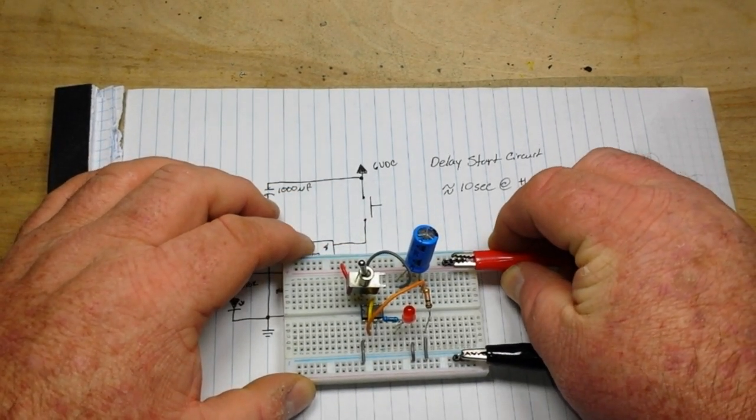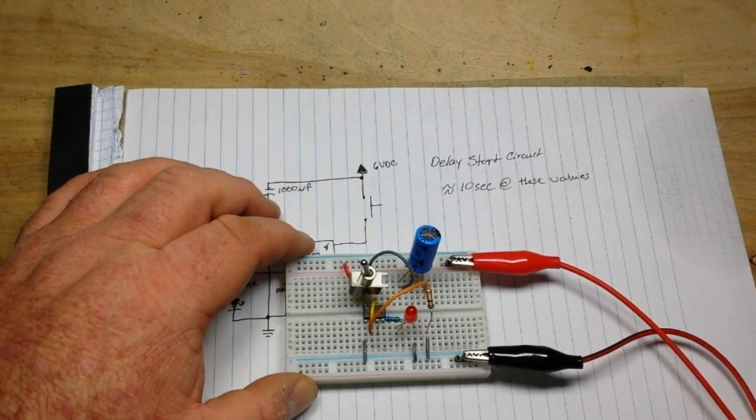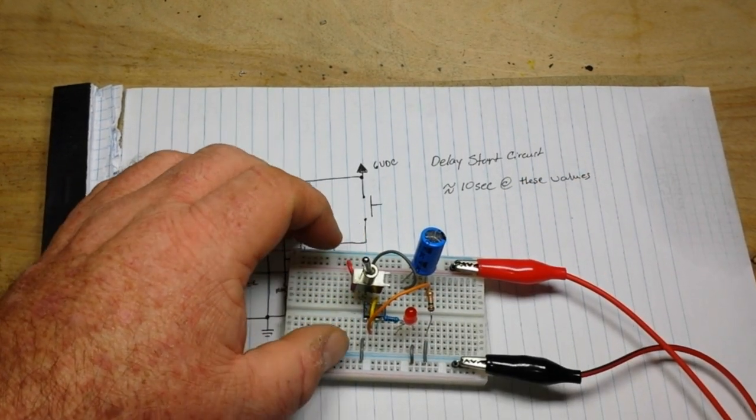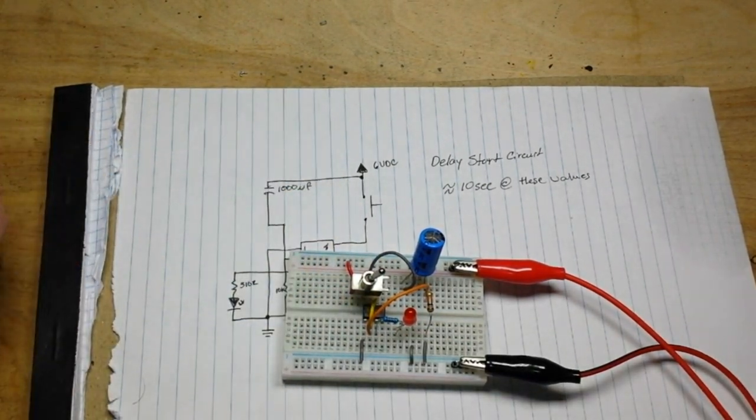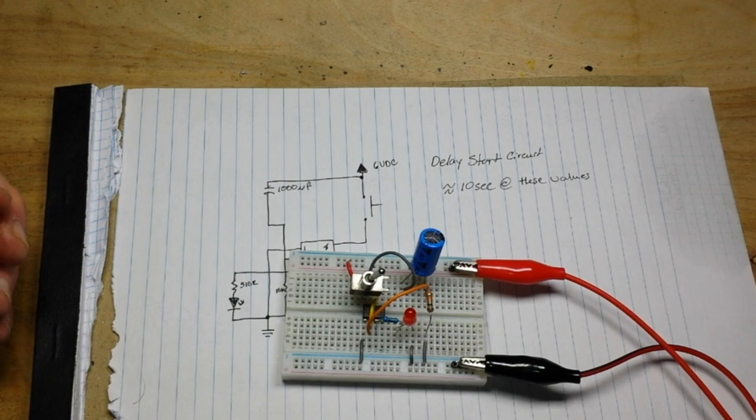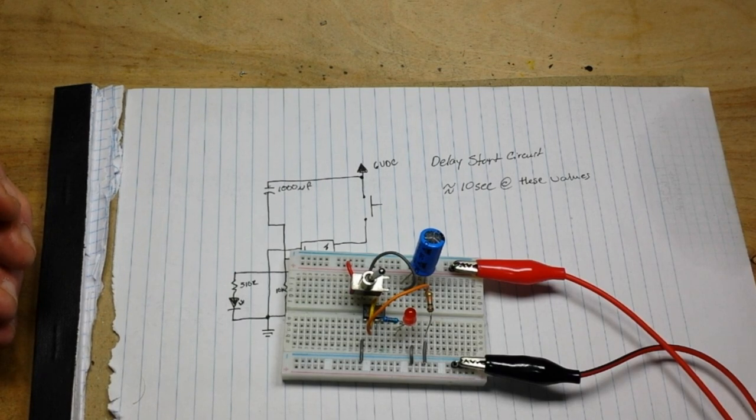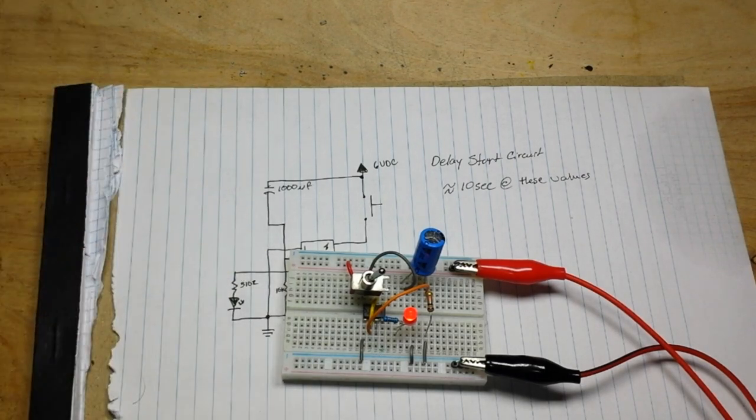So let's power it up, always connecting our grounds first so that our circuit is equal potential to anything it may be connected to. Switch is off and we have nothing. Switch is kind of flimsy, so I have to hold it with one hand. Power it on. One, two, three, four, five, six, seven, eight, nine, ten, and it pops on. And that's it, that's all there is to it.